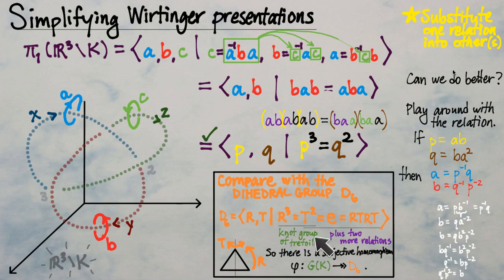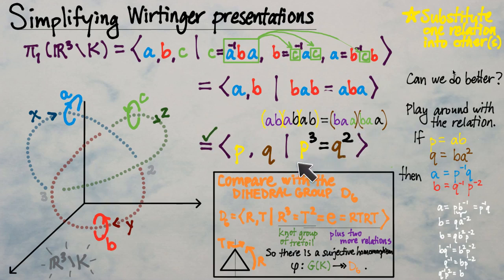The knot group is not the same as the dihedral group, but there is a surjective homomorphism — an epimorphism — from the large infinite knot group onto the finite dihedral group. The knot group is much bigger, yet it mirrors some of the same structure. This gives us a recipe for simplifying Wirtinger presentations in ways that can illuminate the abstract algebraic structure inside knot groups.